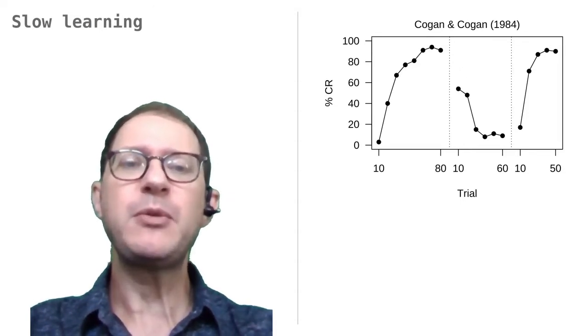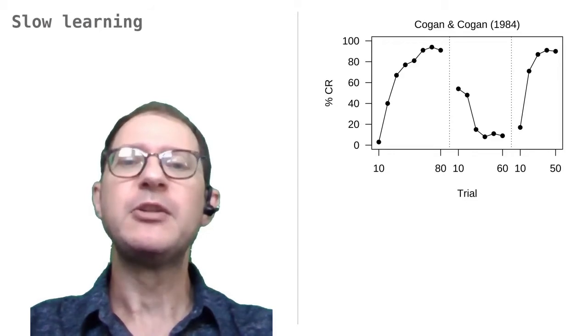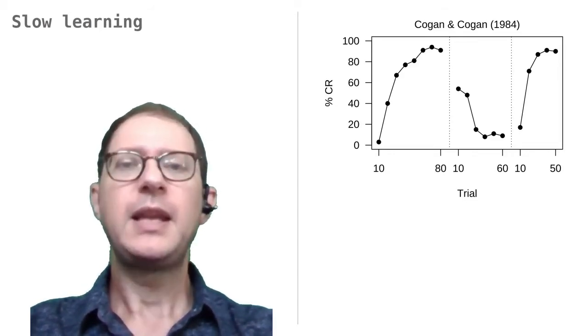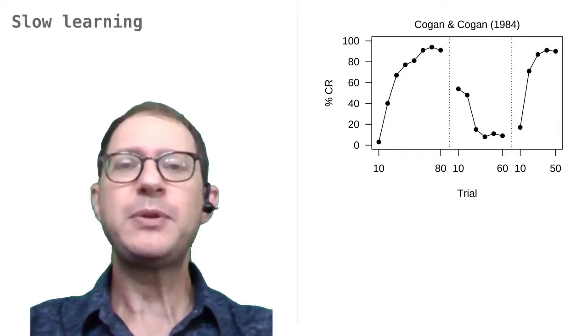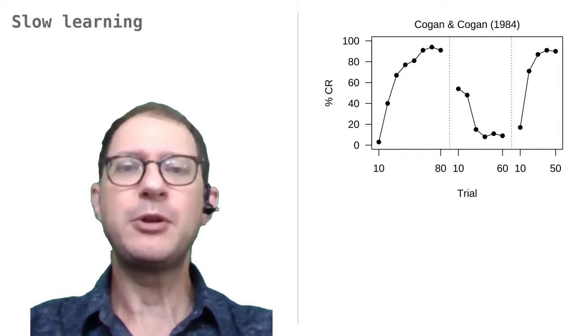I chose an experiment with humans as an example of slow learning to show that people don't always learn more quickly than other species. In this example, the pairing of lemonade powder and water had to be repeated many, many times before people learned about it.